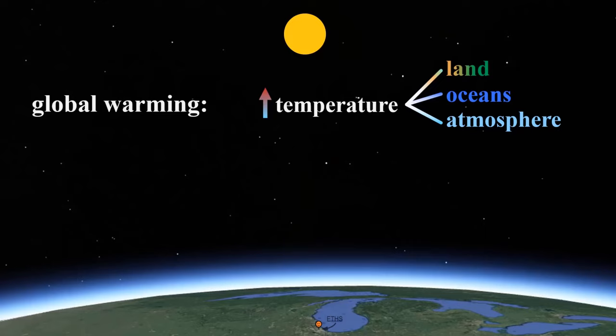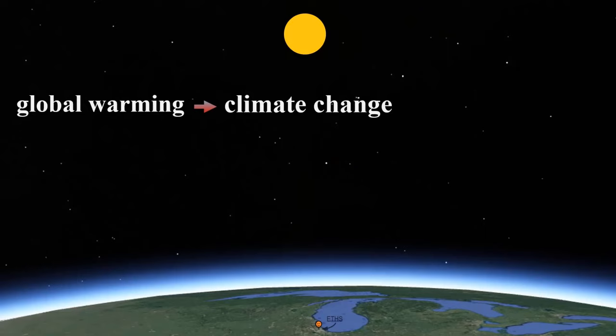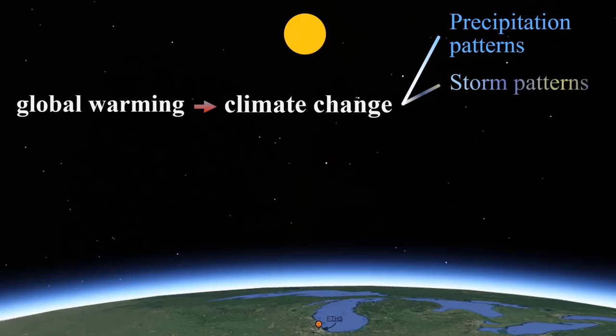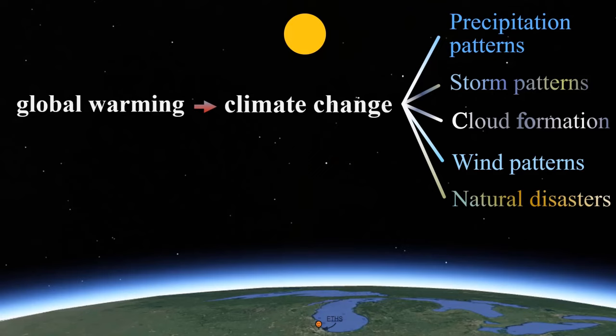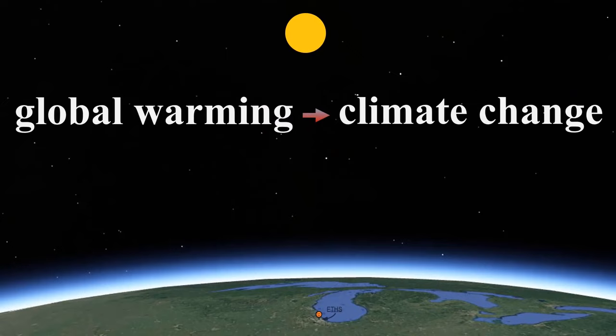The result of that rising temperature is a change in the Earth's climate. Climate change encompasses all of the physical and meteorological consequences of global warming, such as changes in precipitation patterns, storm patterns, cloud formation, and wind patterns, as well as increasing natural disasters — all resulting from increasing global temperature of the land, oceans, and atmosphere. So the two processes, global warming and climate change, are intimately connected.